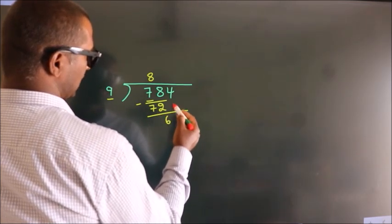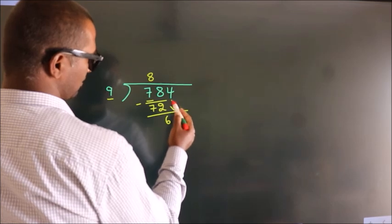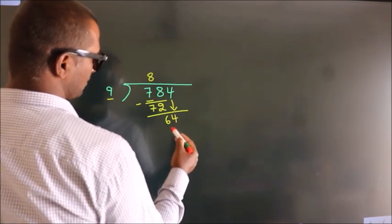After this, bring down the beside number. So 4 down, so 64.